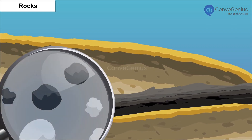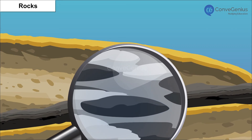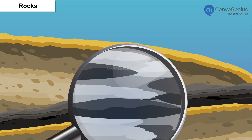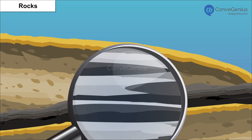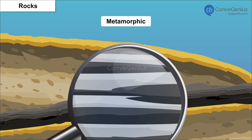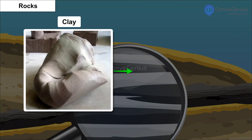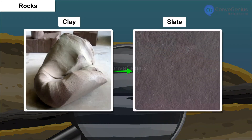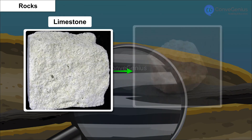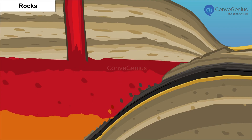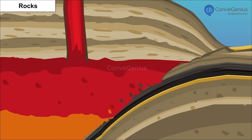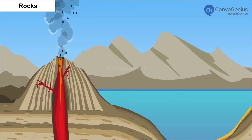These sediments, when compressed and hardened, form sedimentary rocks such as sandstone. Further, when igneous and sedimentary rocks get subjected to heat and pressure, their composition changes and metamorphic rocks are formed. For example, clay changes into slate and limestone into marble. These metamorphic rocks are under constant heat and pressure and melt to form molten magma again, and the cycle continues.